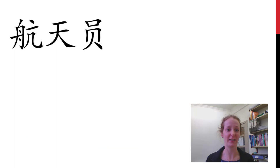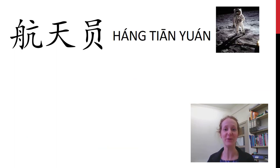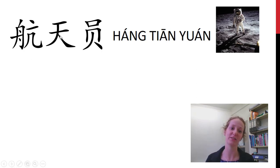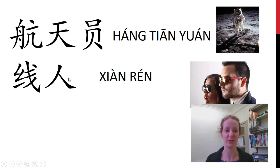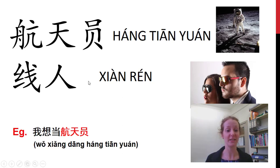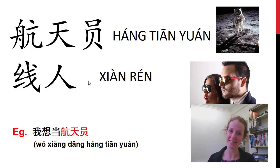And finally we have our 航天员 — our astronaut, literally like an aircraft sky person. And a 线人 — a spy, or an informant. 线 means a line or like a connection, and 人 means a person. 我想当航天员. Hope that you found these really helpful. 谢谢. 再见. Thank you.